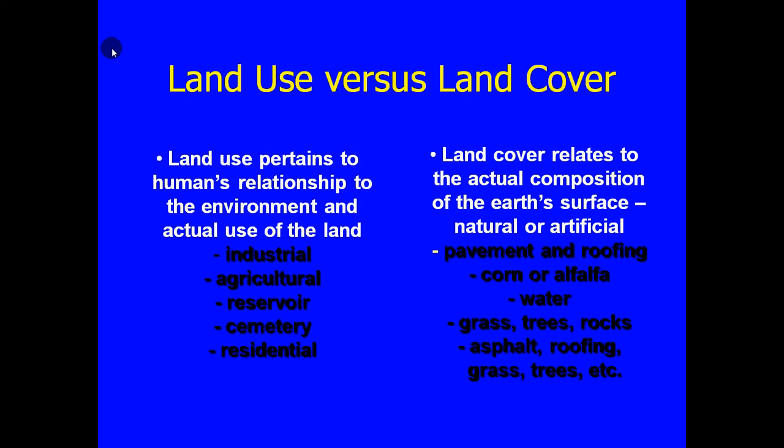For example, a cemetery and a golf course are very different land uses with very different audiences or users. However, as land cover they're both grassy rolling areas of land. So as far as land cover goes, a cemetery and a golf course would be synonymous, because the hydrologic and ecological response would be very similar even though from the human point of view those are considered two very different uses of the land.